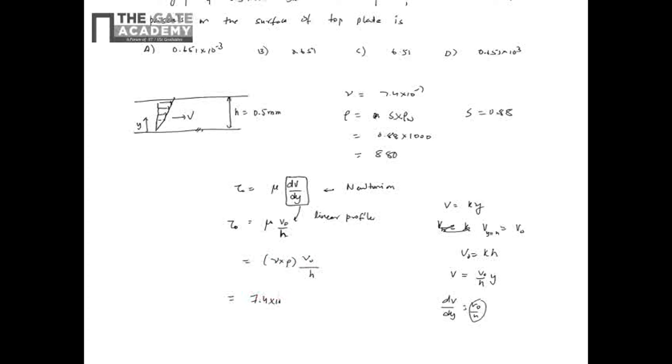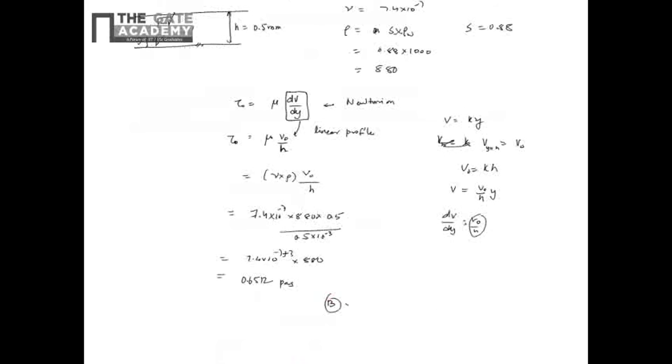It is all direct problem: 7.4 into 10 power minus 7 into 880, velocity is 0.5 meters per second by height is 0.5 mm so 0.5 into 10 power minus 3. So this will come out to be 7.4 into 10 power minus 7 plus 7 into 880. And this value comes out to be 0.6512, so 0.6512 pascals.